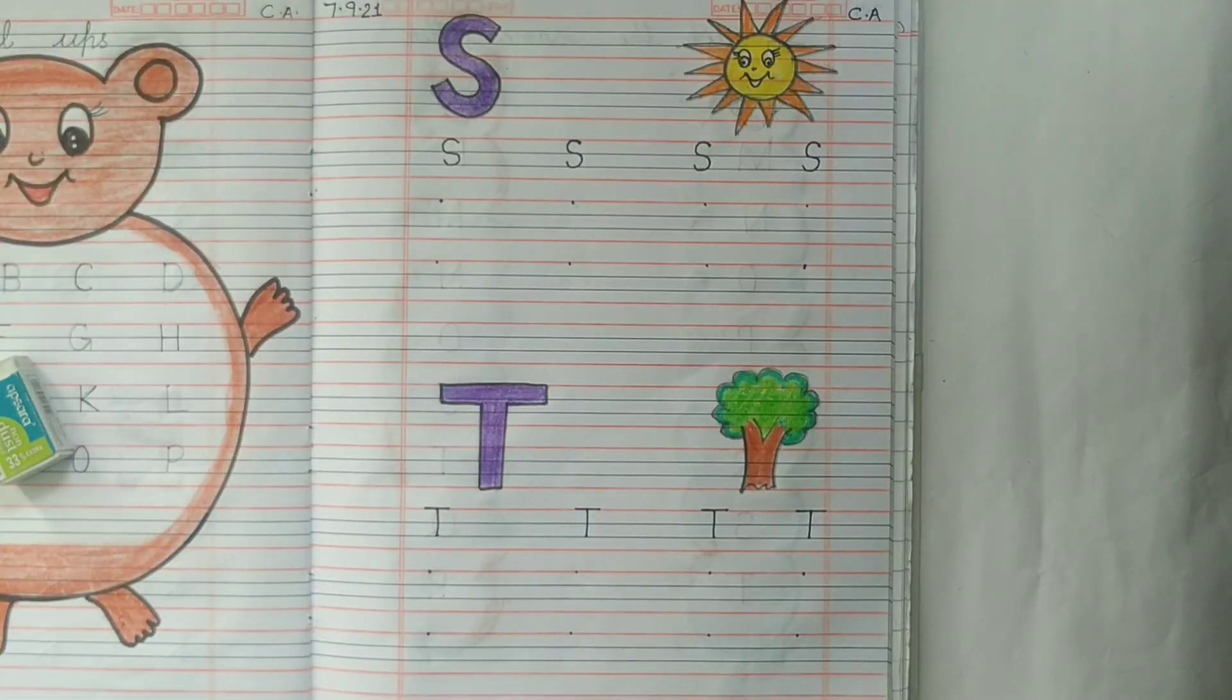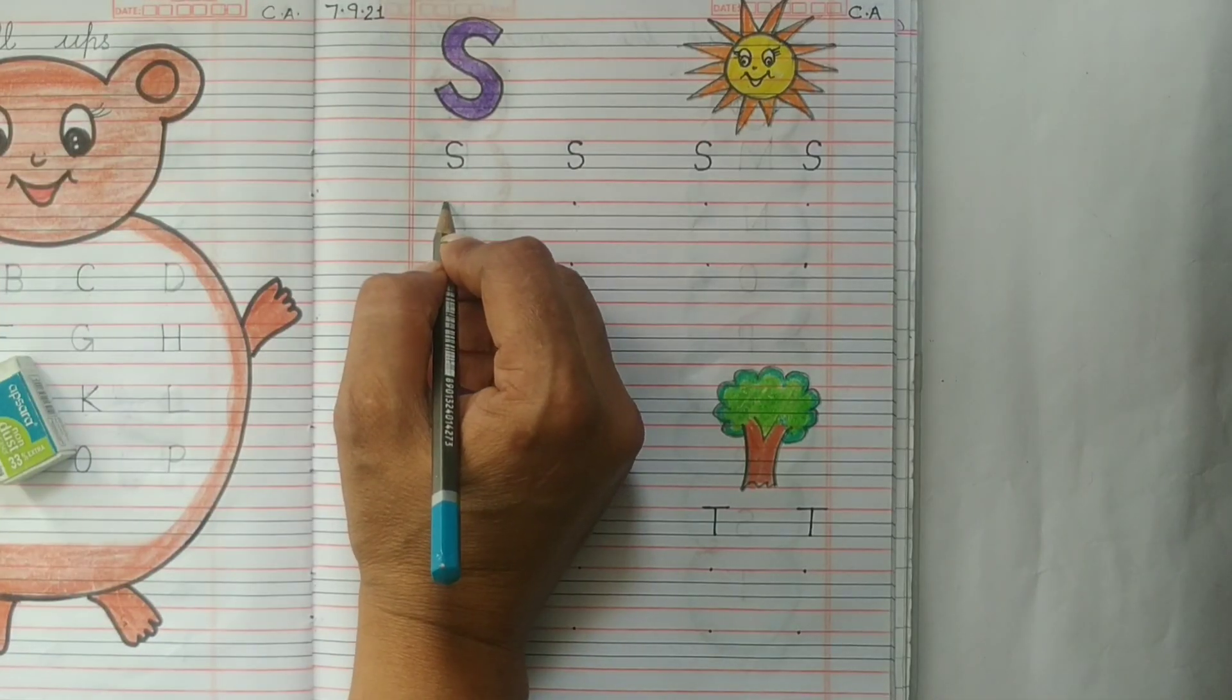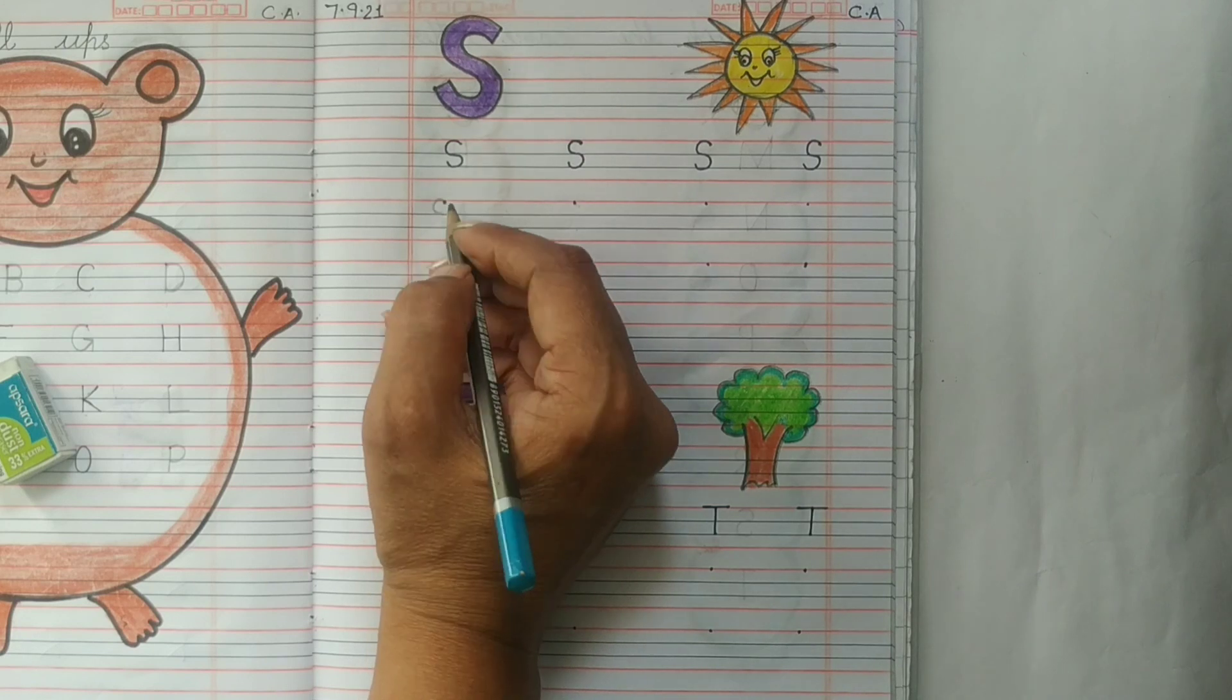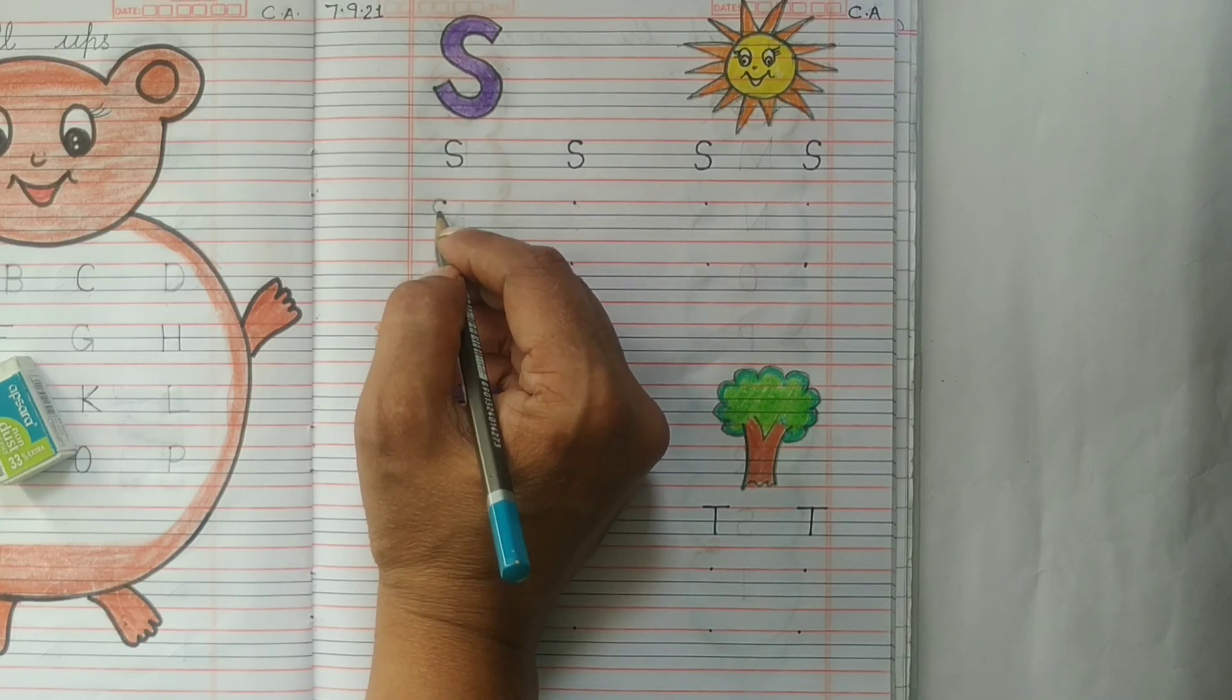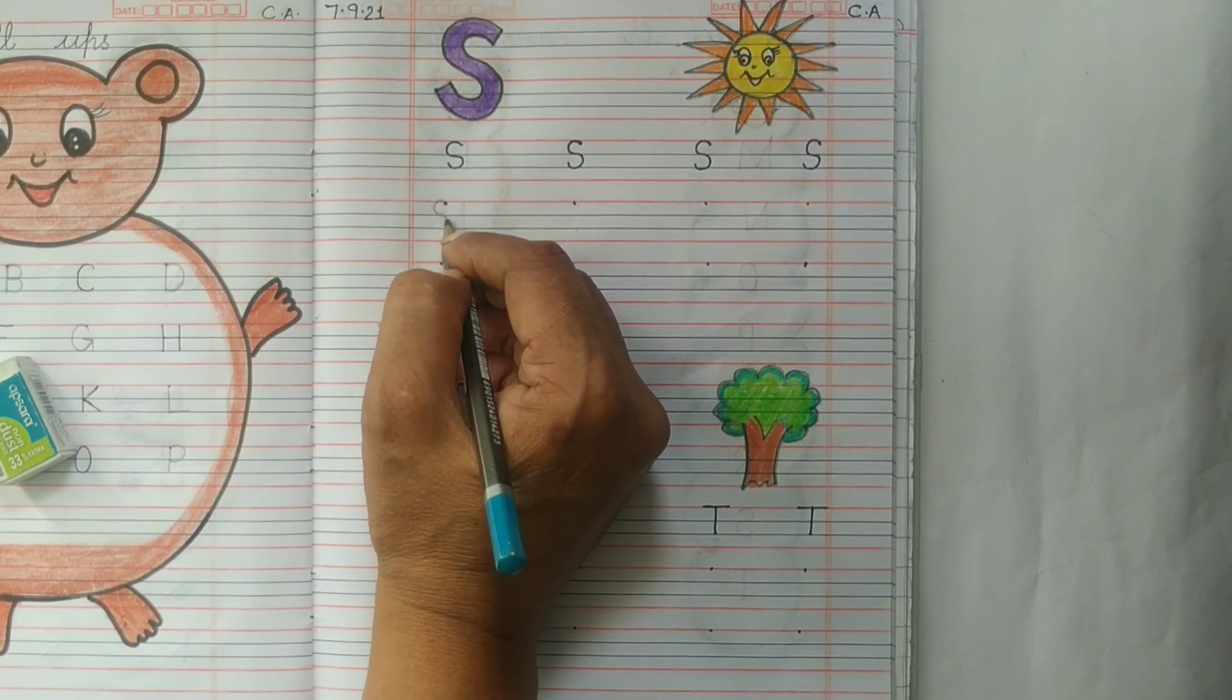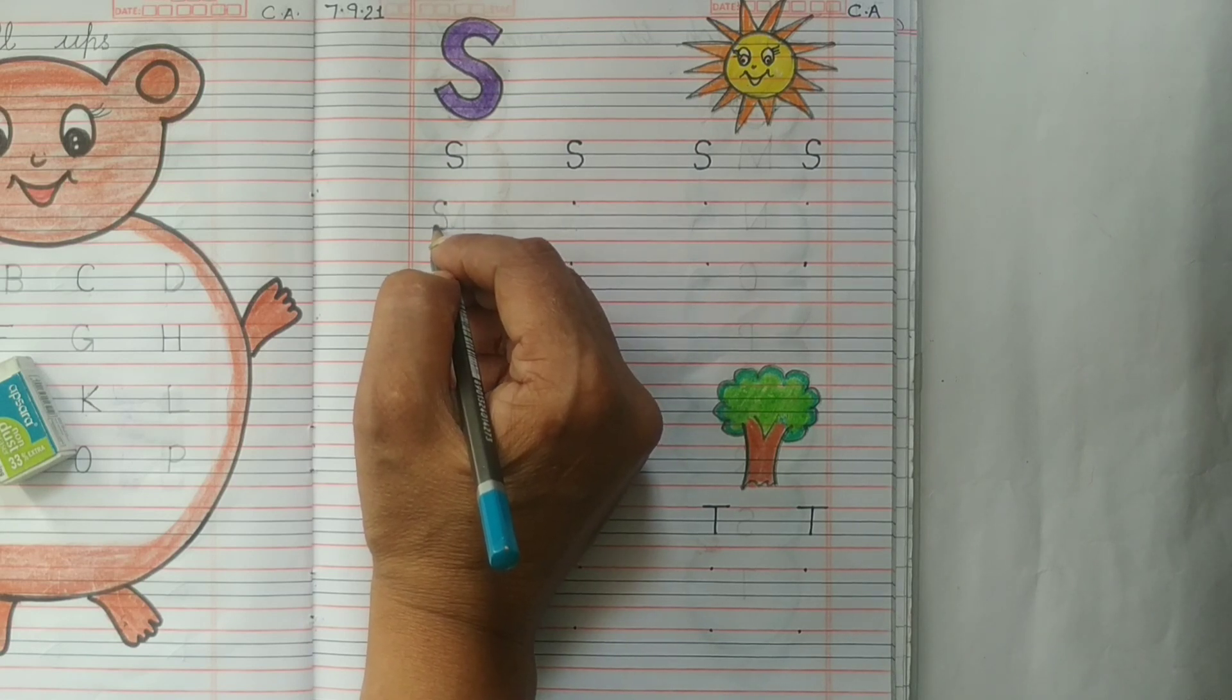Now we will do the writing work of letter S. Start from the top, swing to the left and create a curve. Then swing to the right and create another curve, another backward curve at the bottom.